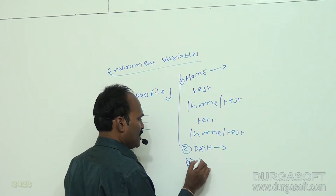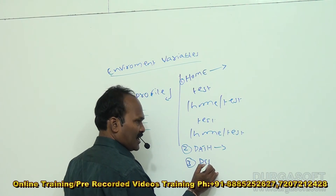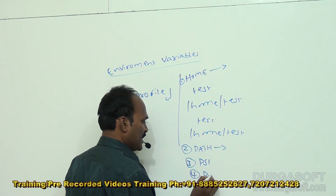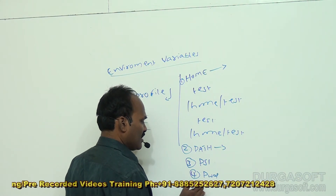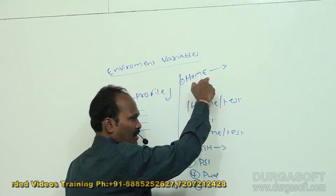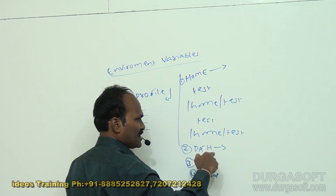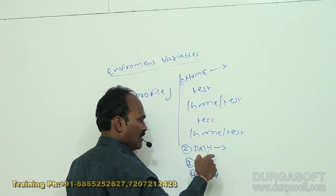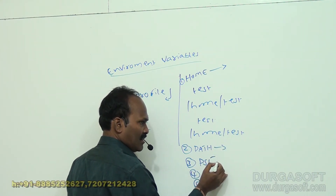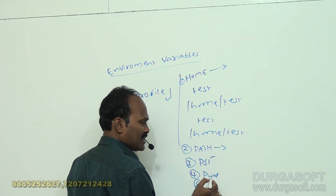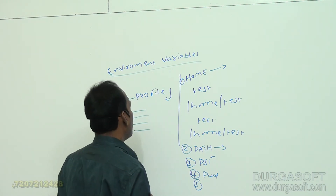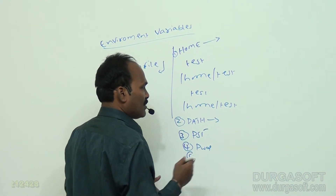According to our requirement, we can set PATH to anything. Next is PS1 — this is going to change our default prompt. Next is PWD — this displays the present working directory. HOME displays the home folder and PATH displays the paths that are set. PS1 is for the default prompt, PWD is for displaying the current working directory.